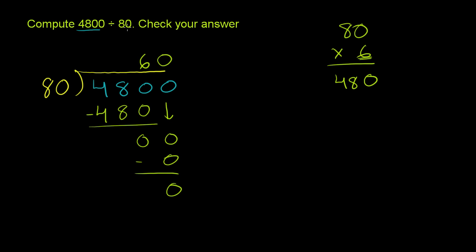4,800 divided by 80 is 60. When the dividend is 4,800, the divisor, let me write these words down, this is divisor, this is dividend, then our quotient is 60.